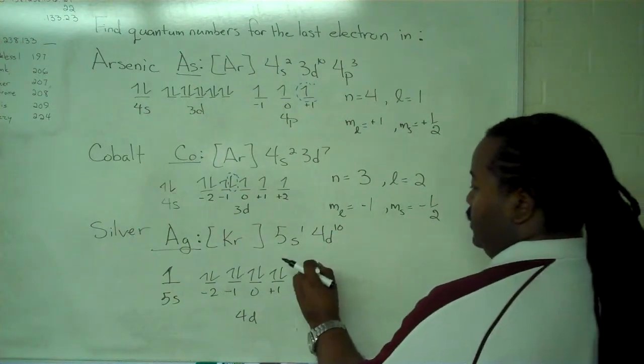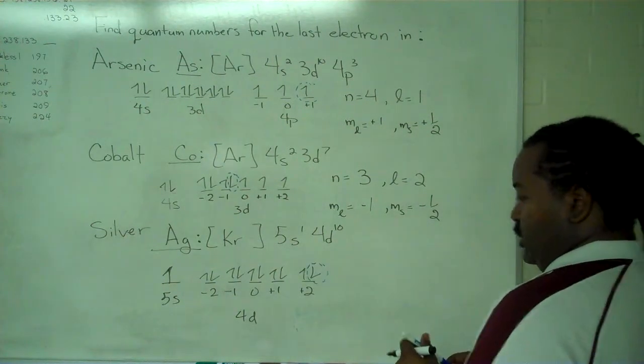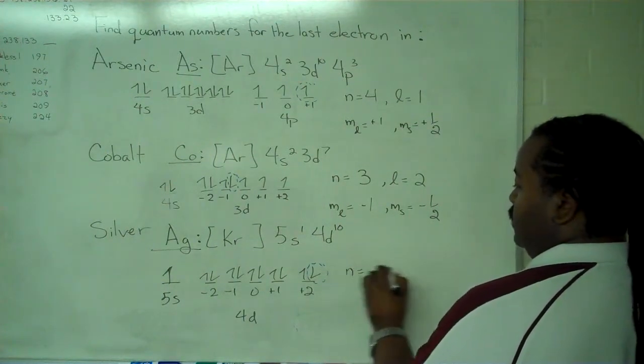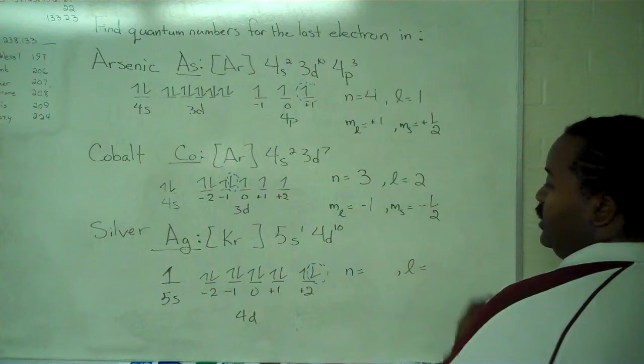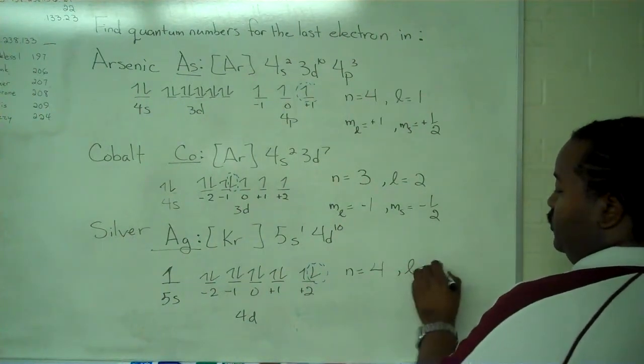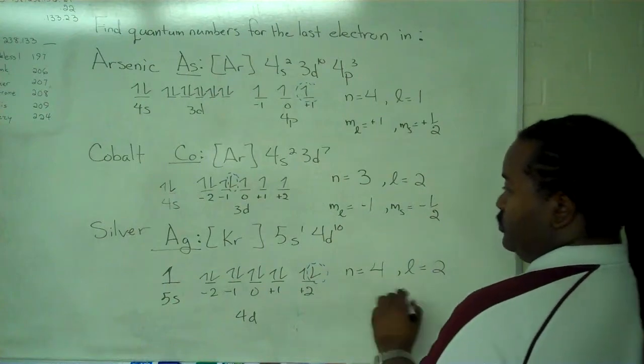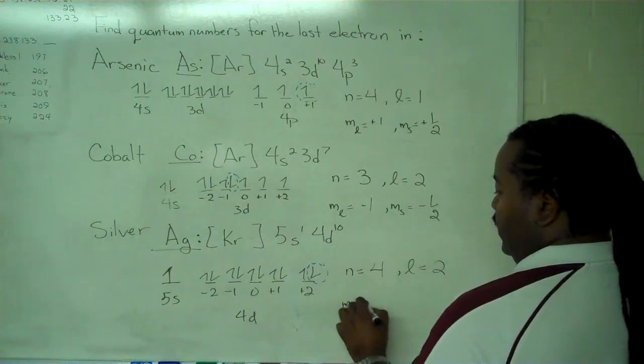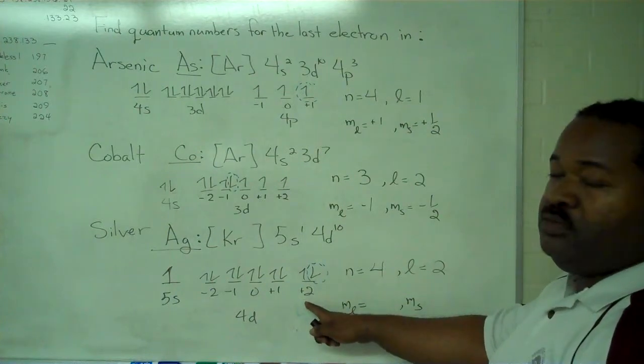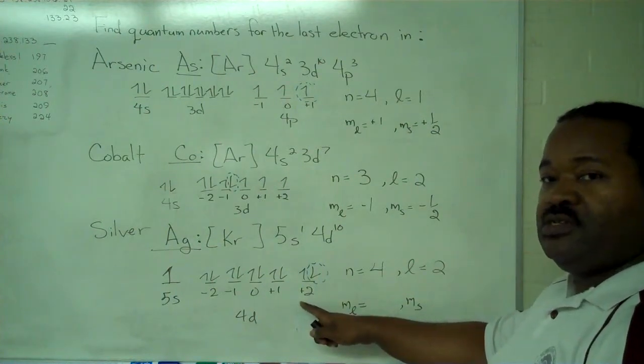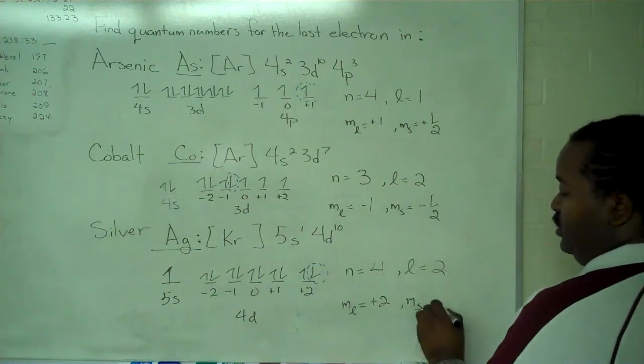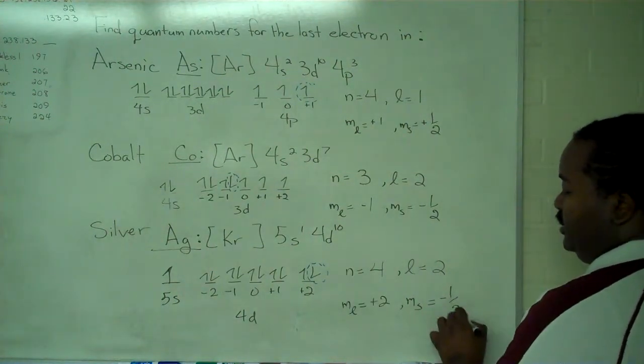This last one is the one we're interested in, and we can write out the quantum numbers as a result. Our principal and secondary come from the fact that it's 4d. That means that n equals 4 and l equals 2. Our magnetic and spin are determined from looking at where our electron is. So, we have a plus 2 for the magnetic, and for the spin, minus 1/2.